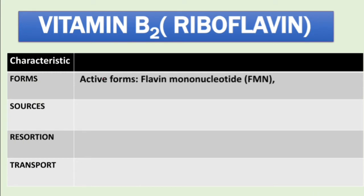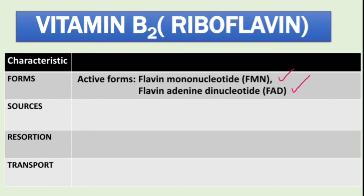The first active form is flavin mononucleotide, or FMN. The second is flavin adenine dinucleotide, or FAD. So these are the two active forms of vitamin B2.